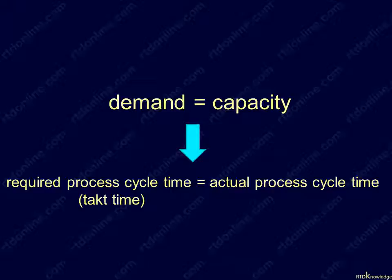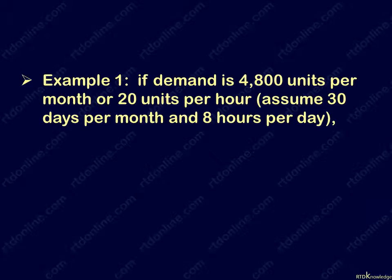In a process, when the TAC time is equal to its cycle time, there is a perfect match between demand and capacity, meaning there are no unserved demand nor excess capacity like manpower. Let's look at an example.